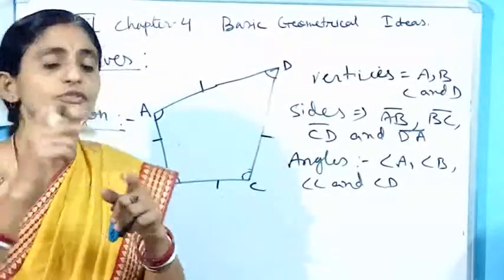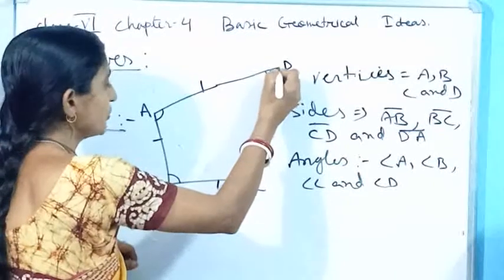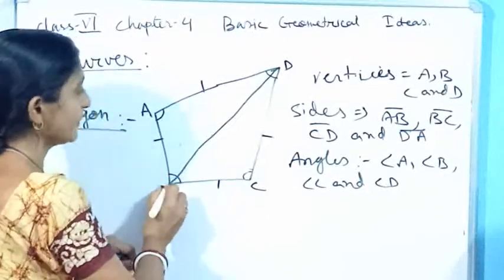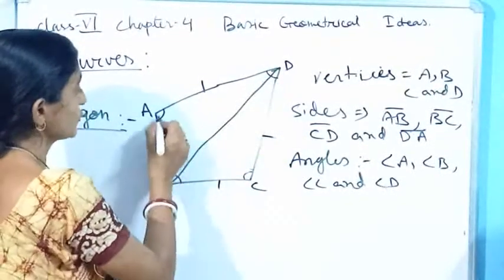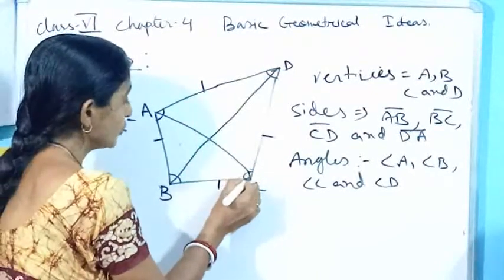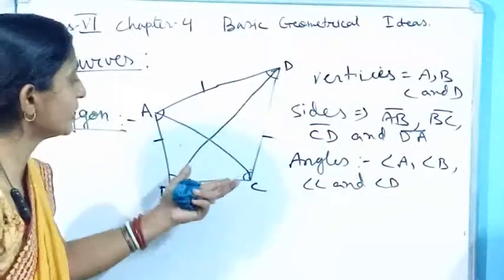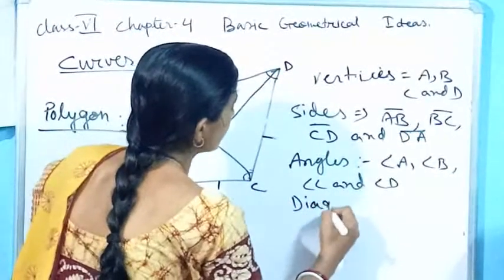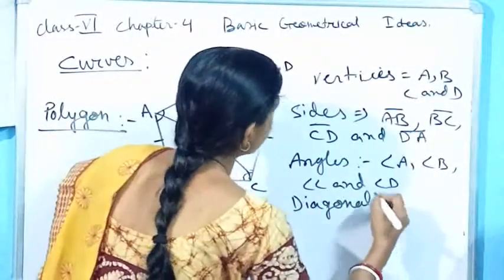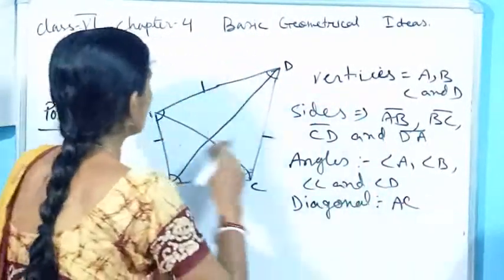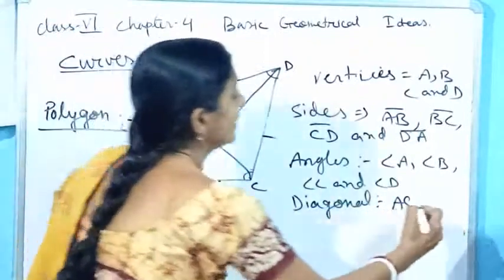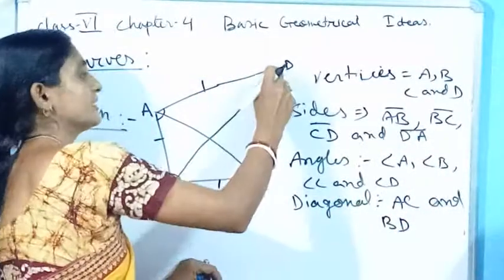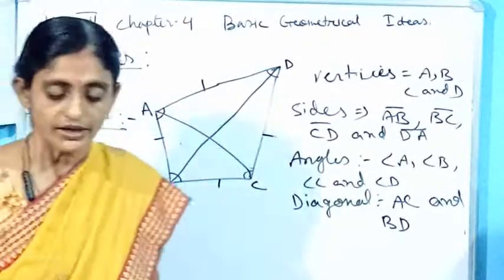But if I am joining the opposite vertices — the opposite vertex of B is D — if I am joining these opposite vertices, the line I will get in case of a polygon is called a diagonal. So here I have got two diagonals. The first one is AC — we join two opposite vertices A and C. And another one is BD — we join vertices B and D by this line segment.